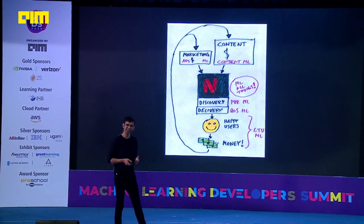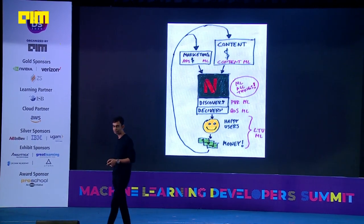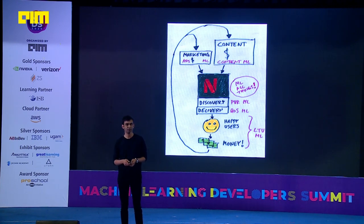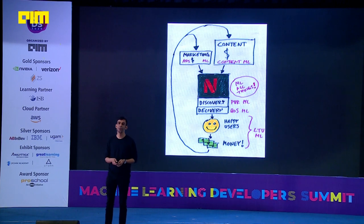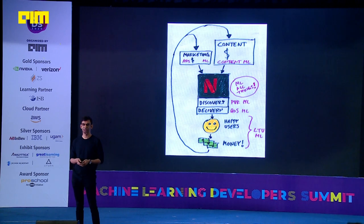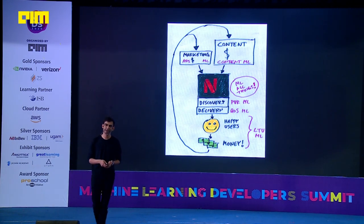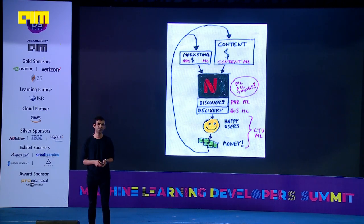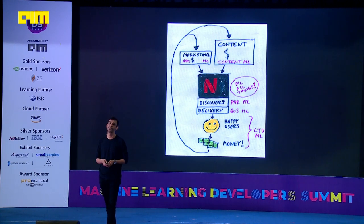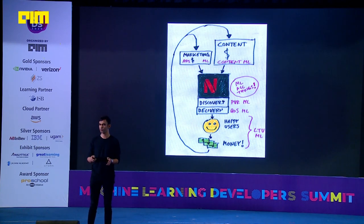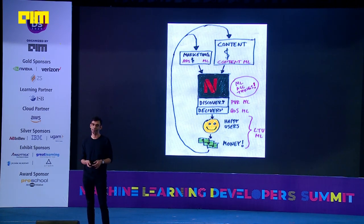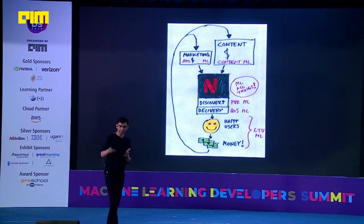Our recommendation algorithm is called PVR — Product Video Ranker — and it's one of the biggest pieces of ML application we have. On any given day, Netflix is responsible for roughly 30 to 40% of downstream internet traffic. Every time you hit play, control passes to our content distribution network — physical boxes Netflix builds and ships to ISPs and internet exchange points. Our data scientists need to predict what content will be popular in any given geographical area so we can seed that content on those boxes, which have limited storage capacity.